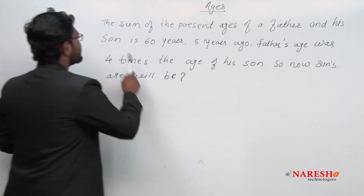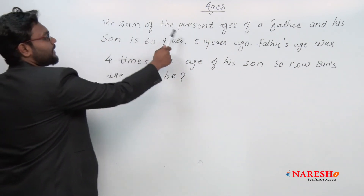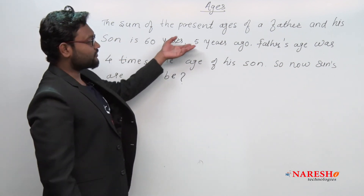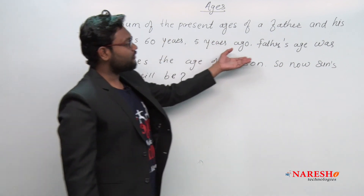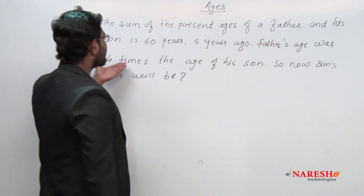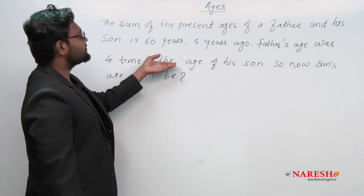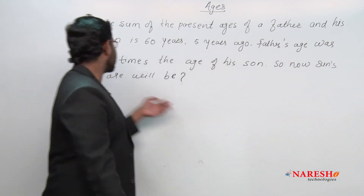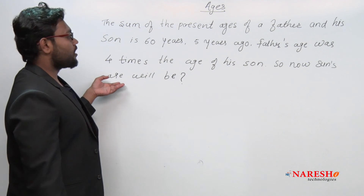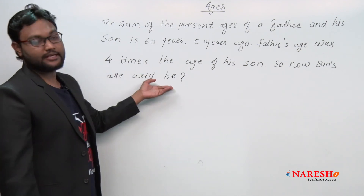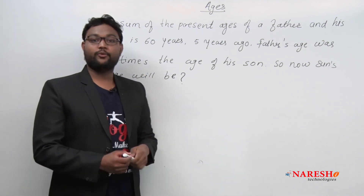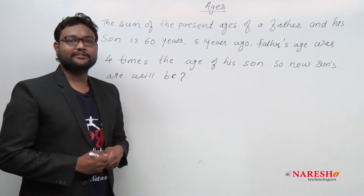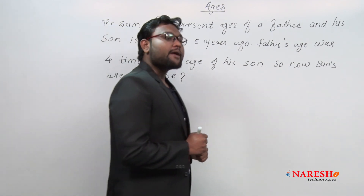The sum of the present ages of a father and his son is sixty years. Five years ago, father's age was four times the age of his son. We need to find the son's present age. This is what the question is asking us.